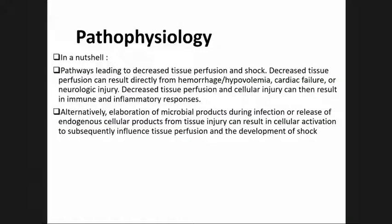In summary, pathways leading to decreased tissue perfusion in shock: decreased tissue perfusion can result directly from hemorrhage or hypovolemia, cardiac failure, or neurologic injury. Decreased tissue perfusion and cellular injury can then result in immune and inflammatory responses. Alternatively, elaboration of microbial products during infection or release of endogenous cellular products from tissue injury can result in cellular activation that subsequently influences tissue perfusion and the development of shock.